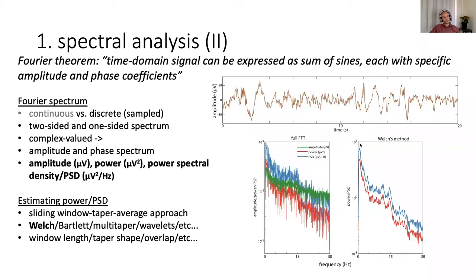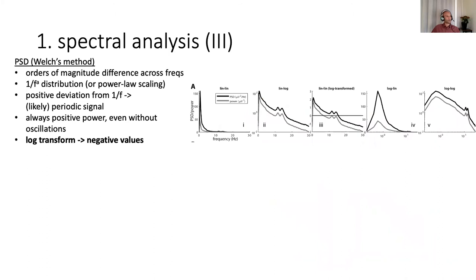There's lots of different approaches for doing that: Welch, Bartlett, Multitaper, Wavelet approaches. I've mostly used Welch, and that's what I'm showing here on the right side. You can immediately appreciate that even for this short bit of data, 20 seconds, taking this Welch approach already cleans up the data. It's also important to mention that already here we have lots of parameter choices to choose from: window length, taper shape, overlap. These can all affect the exact shape of your power spectrum.